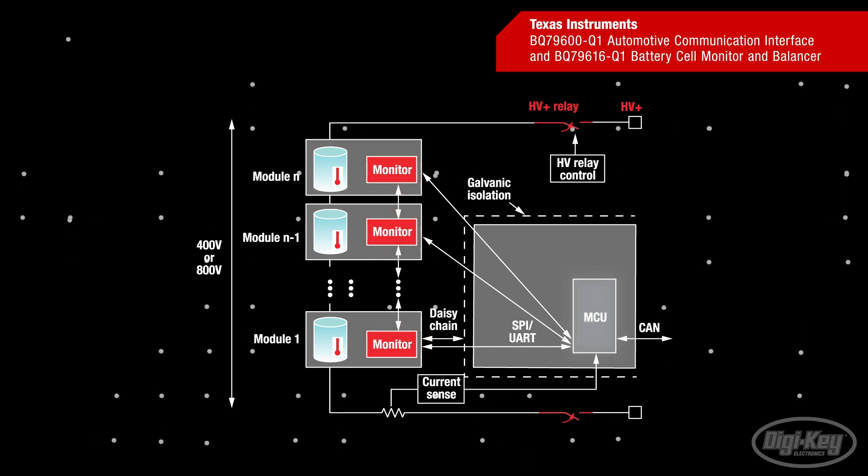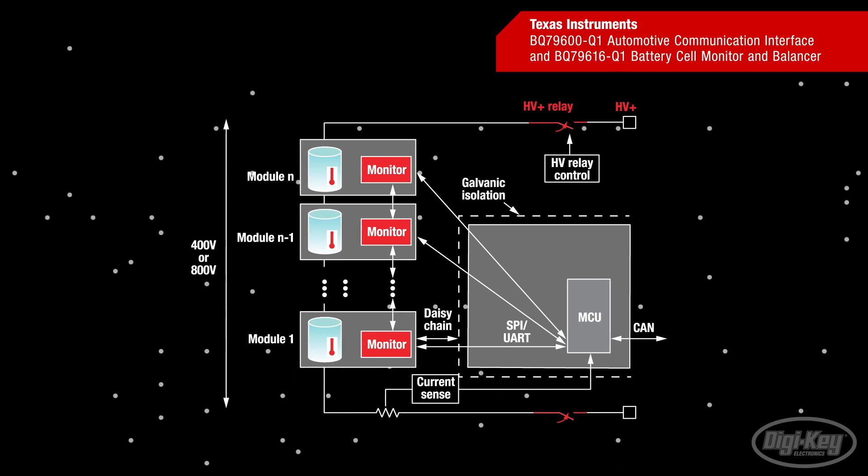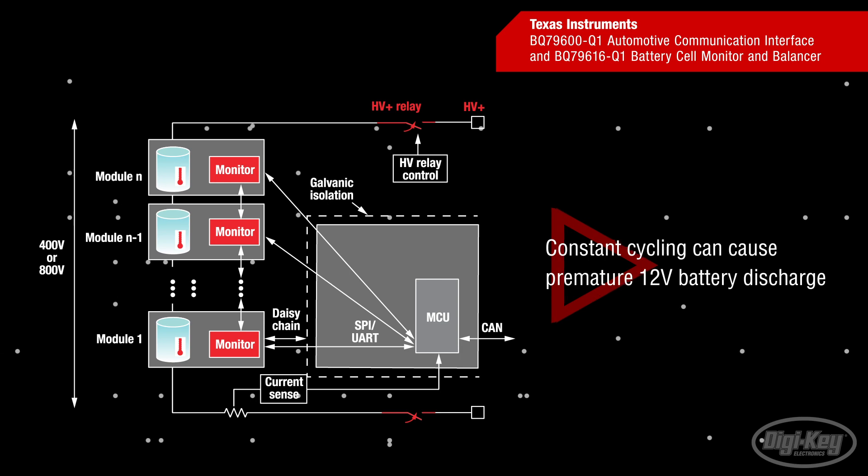The BMU is powered by the car's 12-volt battery, which remains on to power functions such as security and keyless entry. But the constant cycling by the BMU can cause premature discharge of the 12-volt battery.